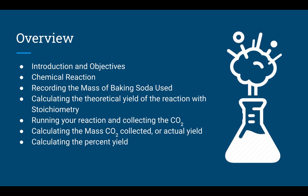Let's start with a quick overview. We'll begin with the introduction and objectives of the experiment, then dive into the actual chemical reaction. Once we understand the reaction, we'll go into the procedure: recording the mass of baking soda used, calculating the theoretical yield using stoichiometry, running the experiment to collect data on carbon dioxide produced, calculating the actual yield, and finally calculating the percent yield.